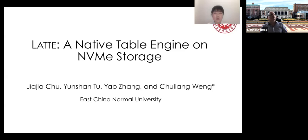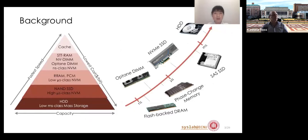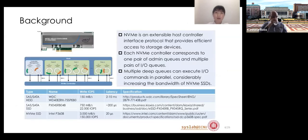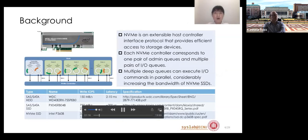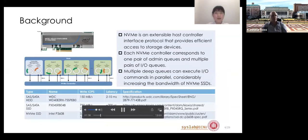The left figure shows a traditional tiered storage pyramid. Storage devices of different materials, different capacities, different prices, and different performance play their respective roles in different tiers. With the development of storage hardware, new types of storage devices are emerging, such as Flash DRAM, Optane DIMMs, and NVMe SSDs. The research work in this paper is based on NVMe SSD.